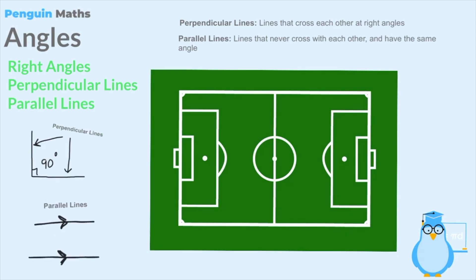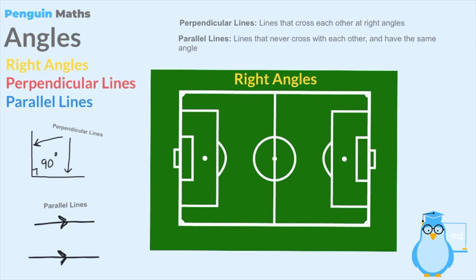Let's look at an example of right angles, perpendicular lines, and parallel lines in the real world by looking at a football pitch. Starting with right angles, we can see plenty straight away due to the rectangles formed by the lines on the pitch. Each of the corners is perfectly right-angled. There are two separate rectangles within the pitch, so those internal corners are all right angles as well, and the 18-yard boxes and six-yard boxes also contain right angles we can identify.